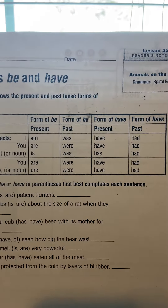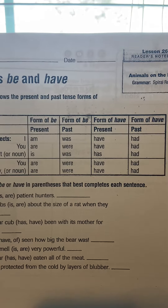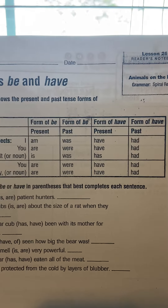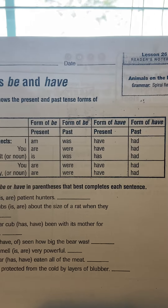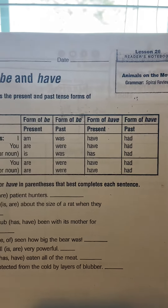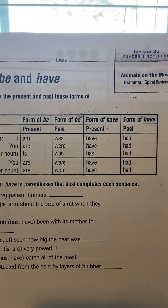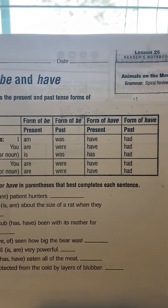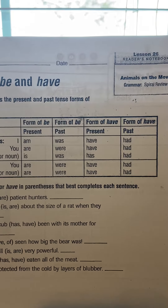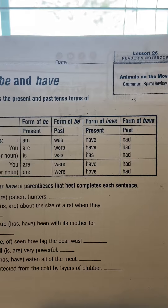Present tense for have is have, have, and has — I have, you have, he/she/it has. And then the past tense is had — I had, you had, he/she/it had.